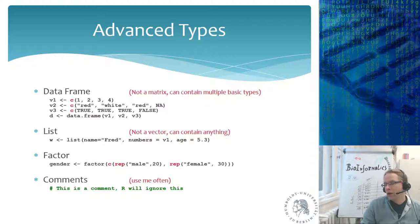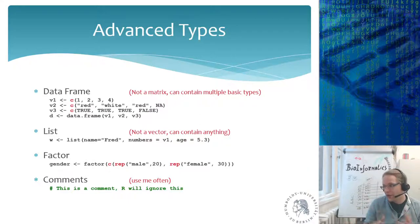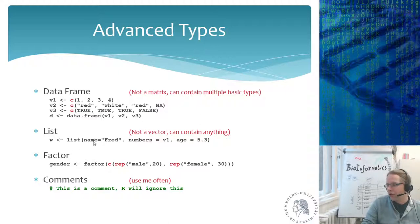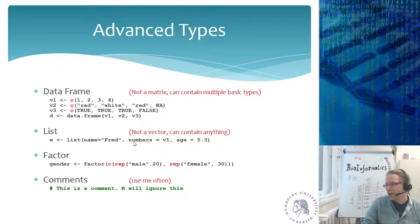Lists are even more flexible — you can put anything in every element, even a matrix or another list, enabling multi-dimensional structures. Lists allow you to give elements names. For example, a list with name='fred', numbers=v1, and h=5.3 — the second element is a vector containing four elements. You could even put an entire data frame into a list element.